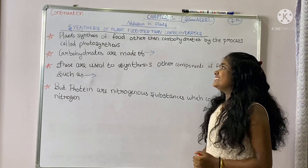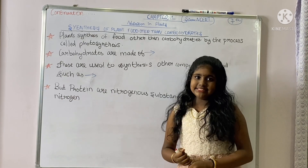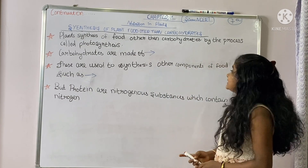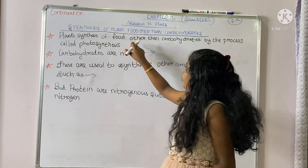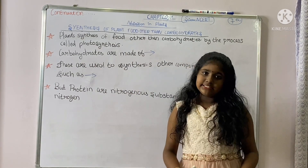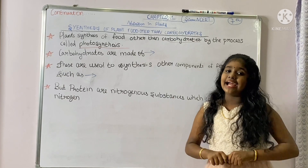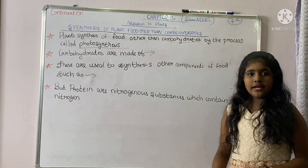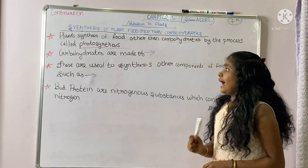Today's topic is the synthesis of plant food other than carbohydrates. We all know that plants make food — carbohydrates — through the process of photosynthesis. Carbohydrate means sugar, and plants also synthesize food other than carbohydrates by this process.